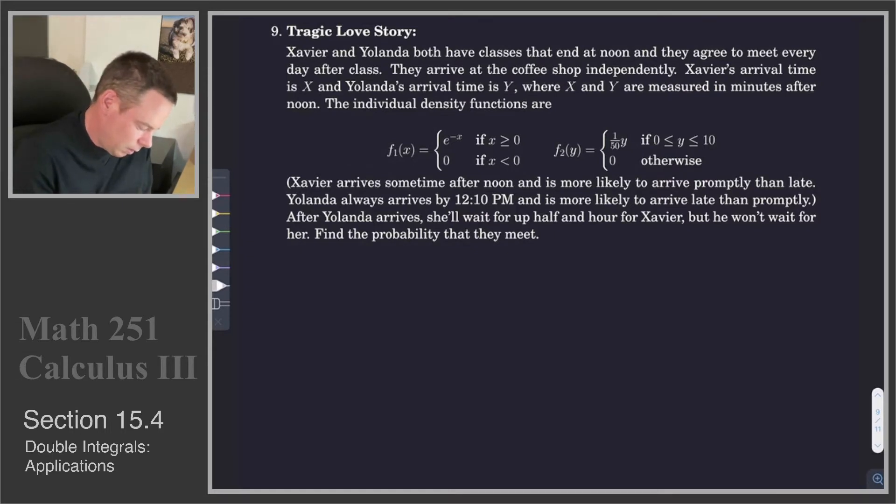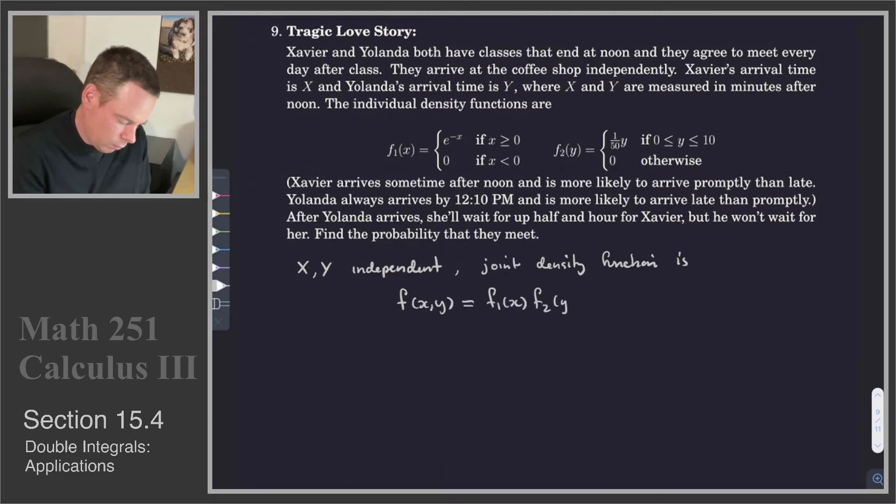Let's go ahead and jot a few things down. X and Y, they are independent random variables. So that means that the joint density function is given by, we'll write it as a function F of X, Y. It's just the product of these two density functions, F1 of X, F2 of Y.